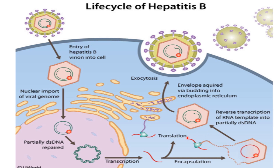The progeny produced is the exact same as the virus that entered — it only lacks the envelope, which it acquires as it buds off into the endoplasmic reticulum. The envelope of the virus is a phospholipid bilayer much like the host membrane. In the end, Hepatitis B has achieved its goal: producing a progeny that is a copycat of its mother, with the same partial double-stranded DNA genome.